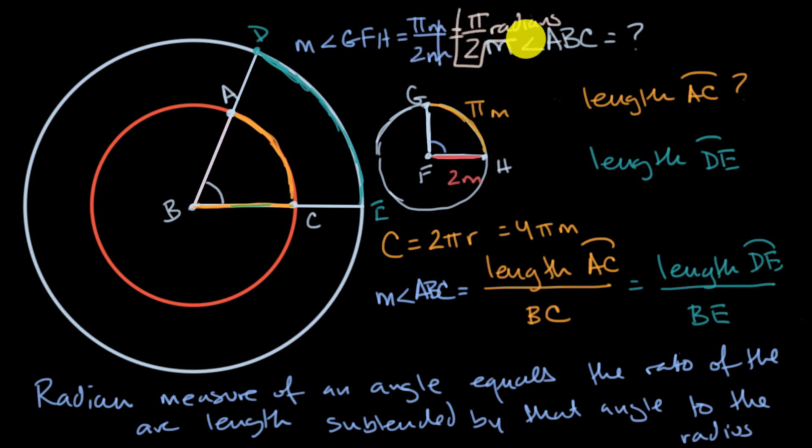Now, one thing to think about is why do we call it radians? It seems close to the word radius. And one way to think about it is when you divide this length by the length of the radius, you're figuring out how many of the radii is equivalent to the arc length in question.